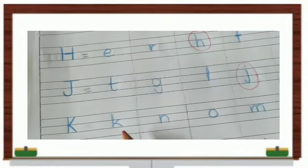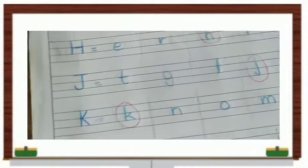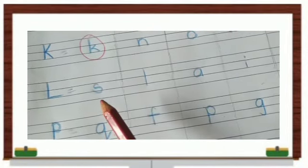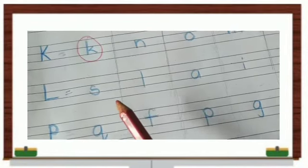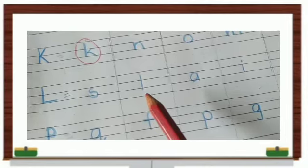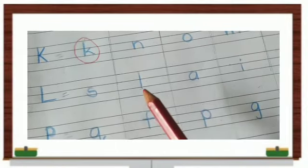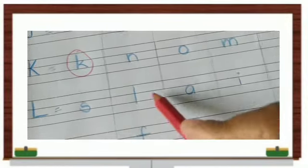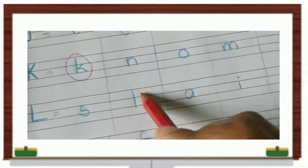Where is small letter K? Yeah, so we will circle small letter K. Letter L — where is L? Yes, this is L. No — S? This is L, so we will circle L.